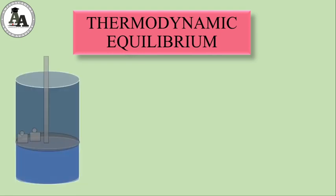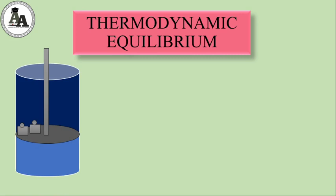Ab ise samajhne ki koshish karte hain. Suppose this is a cylinder — a gas is enclosed in it with a movable piston. I am calling it a movable piston because this piston can move upward and downward.